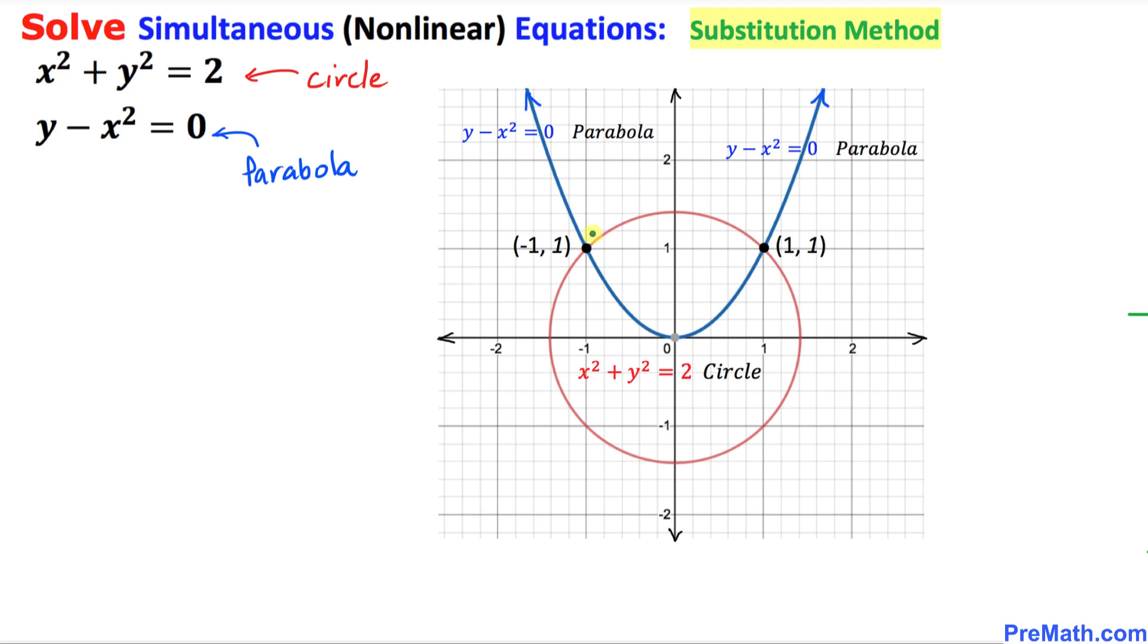The first one is the one where I'm going to circle this one is negative 1, 1 is one of their intersection point. So that's going to be one of their solutions.